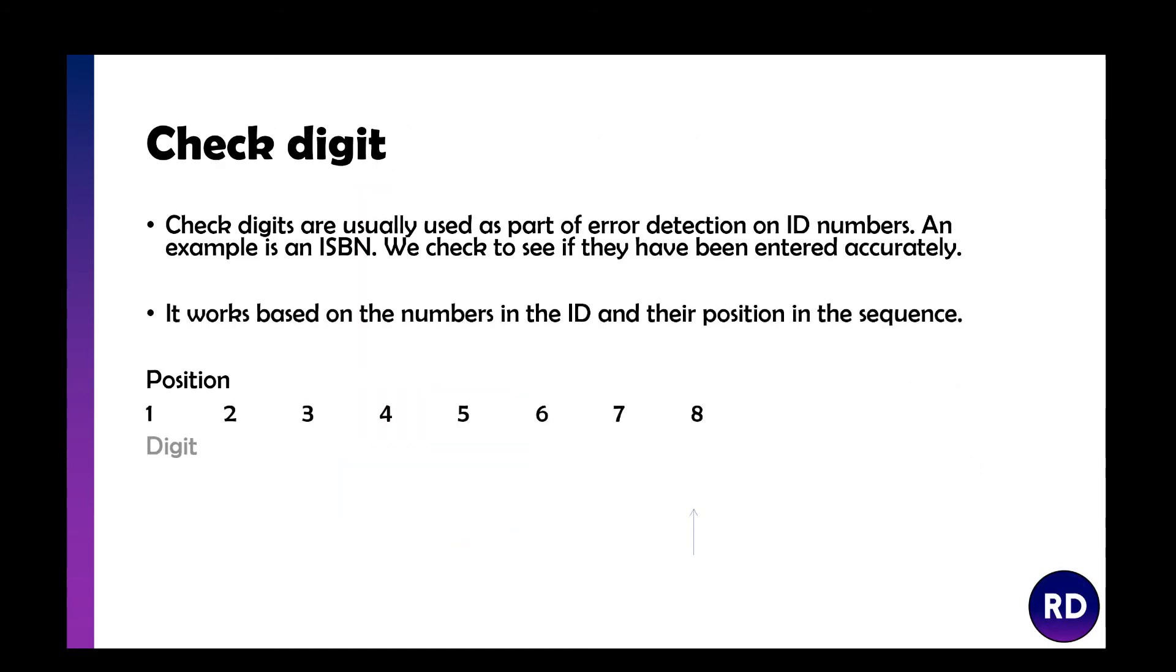Now, a check digit. A check digit is usually used as part of error detection on ID numbers, like a book's ISBN. We check these to see if they've been entered accurately. It works based on the numbers in the ID and their position in the sequence.